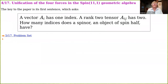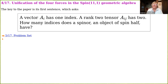The title of this talk is 'Unification of the Four Forces in the Spin 11-1 Geometric Algebra.' The key question in the paper's very first paragraph is this: a vector has one index, a rank-two tensor has two — how many indices does a spinor, an object of spin half, have? You might imagine that a spinor would have half an index. I'll leave that question hanging for a couple of slides.